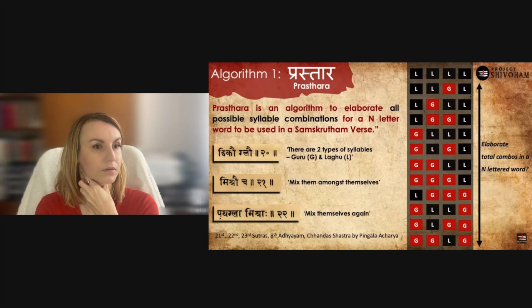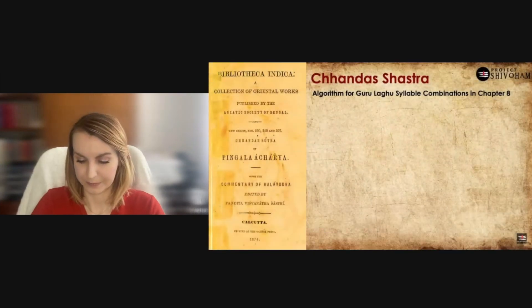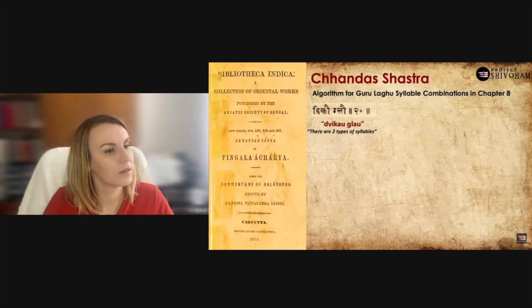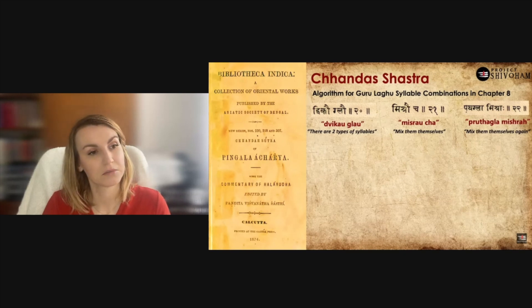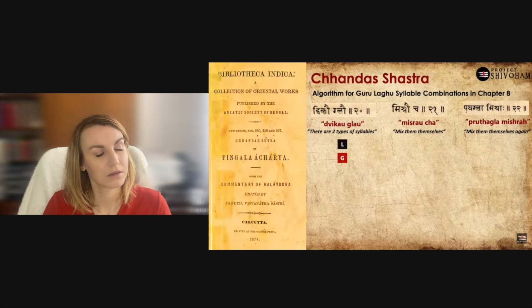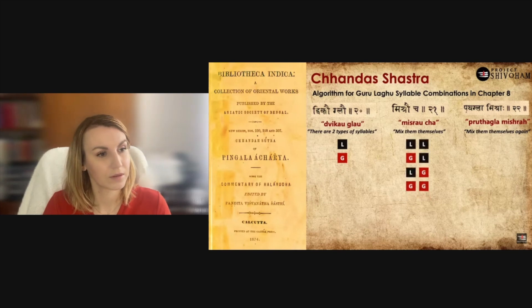Maharshi Pingalacharya states: 'dvika glav misraucha prudagla misraha' — that is the algorithm. There are three steps. Step one, 'dvika glav': there are two syllables, guru and laghu. Step two, 'misraucha': mix themselves — laghu mixed with laghu gives laghu-laghu, and guru mixed with guru gives guru-guru; so we have all four possible combinations in a two-letter word: laghu-laghu, laghu-guru, guru-laghu, guru-guru.